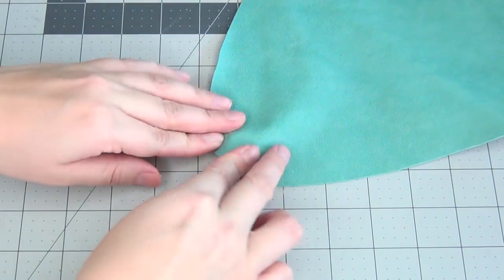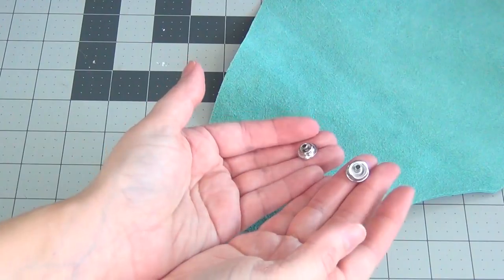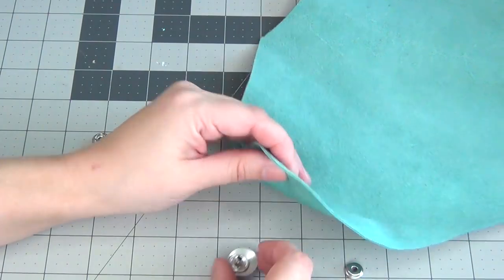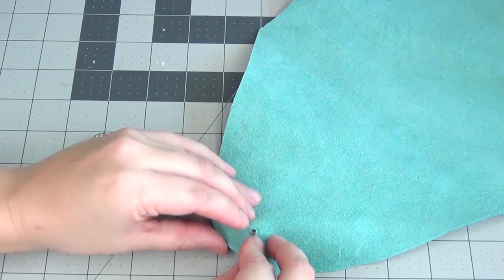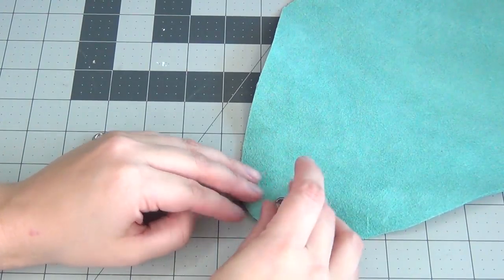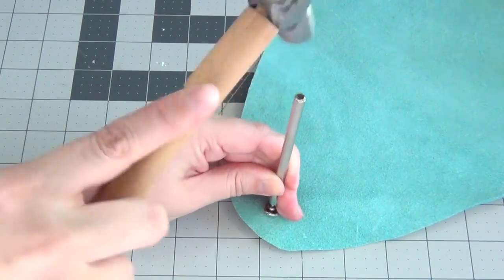Punch a small hole and then begin applying your snaps. Your snaps will come with their own directions as well as a tool to secure them in place. Secure the one on the outer flap first.